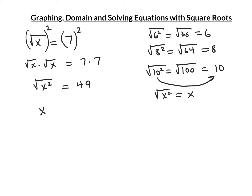So this becomes x equals — take the square root of both sides. The square root of 49 is 7. And that's the answer.